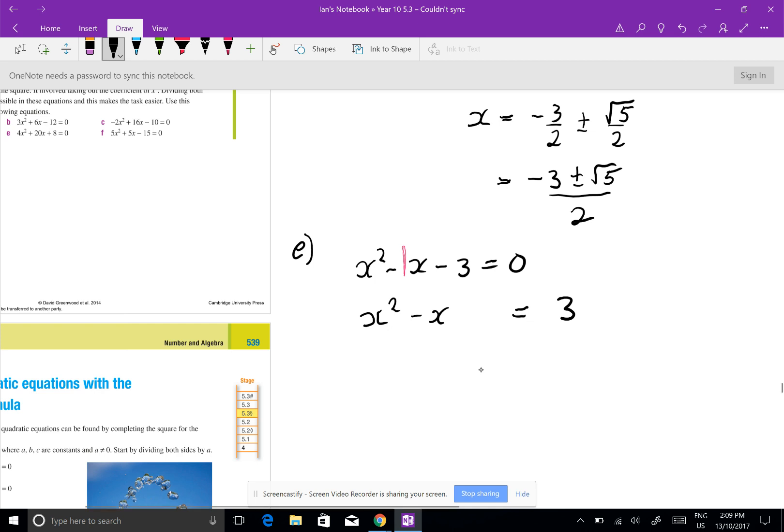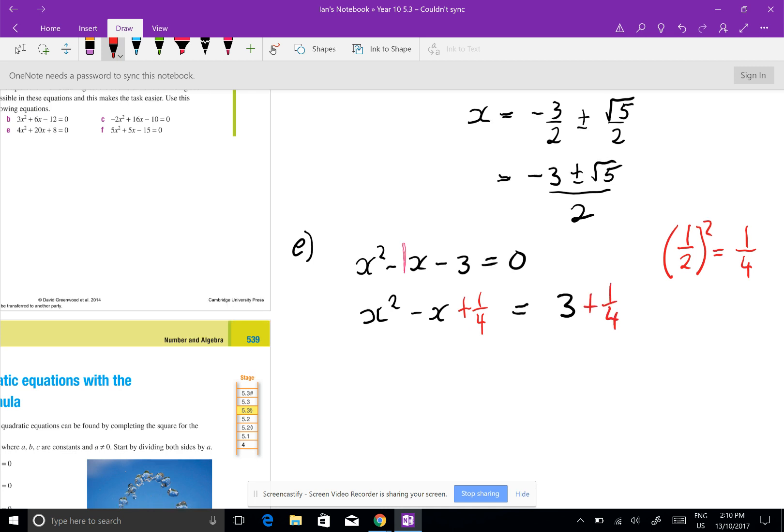Now a half of 1, well that's a half, all squared equals 1 over 4. So I've got to add a quarter to both sides. Add a quarter, add a quarter. Because it's an equation that doesn't change it.